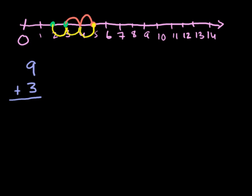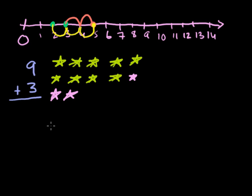So let me write it in a nice soothing purple color. Let's say I wanted to add 9 plus 3. Well there's a couple of ways we could do it. We could draw stars. 1, 2, 3, 4, 5, 6, 7, 8, 9. That's 9 stars. And then I add 3 stars to it. So I add 1, 2, 3 stars. And then if you were to count the total number of stars, 1, 2, 3, 4, 5, 6, 7, 8, 9, 10, 11, 12. I now have 12 stars.